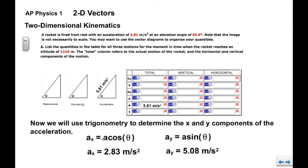We'll put in our data and we find that a sub x is 2.83 meters per second squared, a sub y is 5.08 meters per second squared. If your numbers don't match, check your mode, make sure you're in degrees.